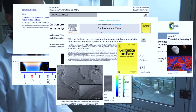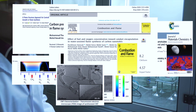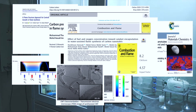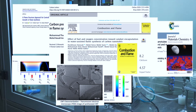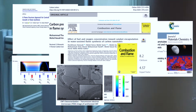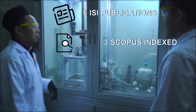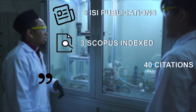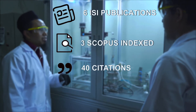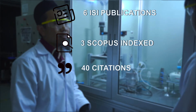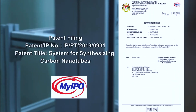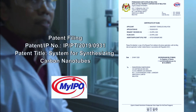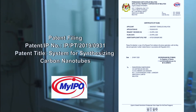Detailed characterization of the nanotubes shows we get what we want: a crystalline structure multi-wall carbon nanotube with an average diameter of 30 nanometers. With 6 ISI publications, 3 Scopus publications and 40 citations since 2017, we successfully filed a patent last year related to water-assisted synthesis.